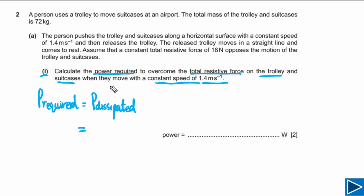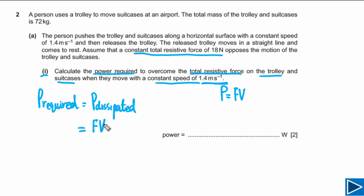Power dissipated can be calculated if we have the resistive forces and the speed of the trolley. A constant total resistive force of 18 N is given and the speed is also constant. Since both force and speed are constant, power equals force times speed: P = 18 N × 1.4 m/s = 25 watts.